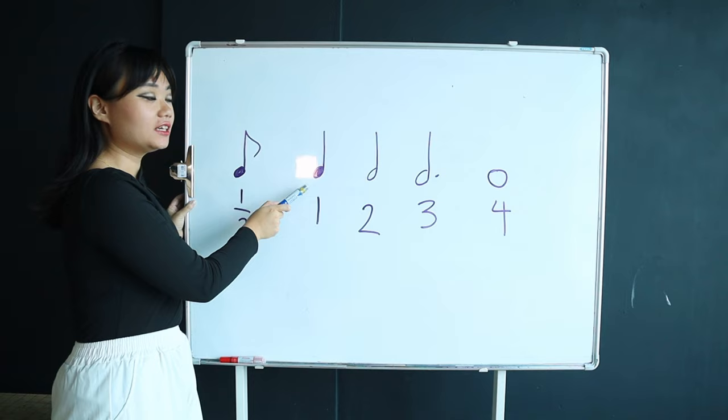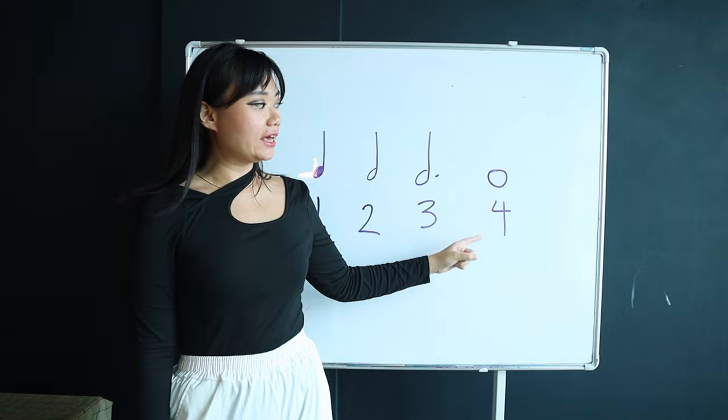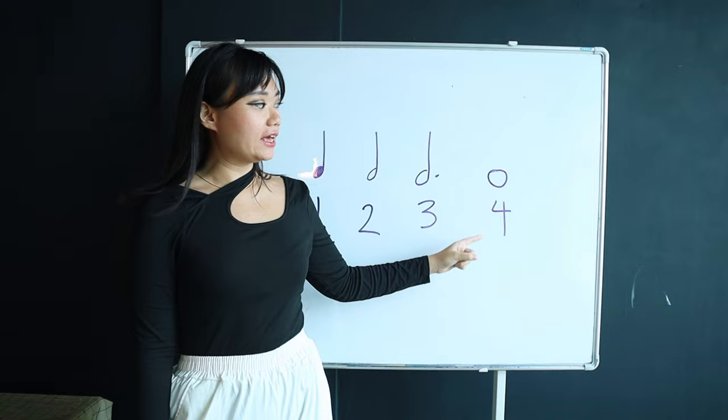This is an eighth note and it has half a count. This is a quarter note and it's one count. This is a half note and it's two counts. This is a dotted half note and it has three counts. And this is called a whole note and it has four counts.